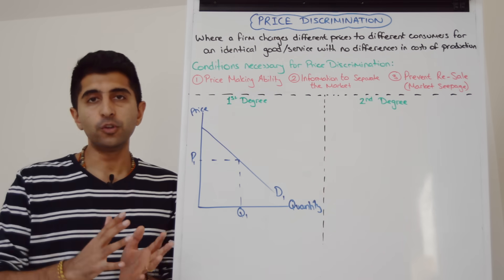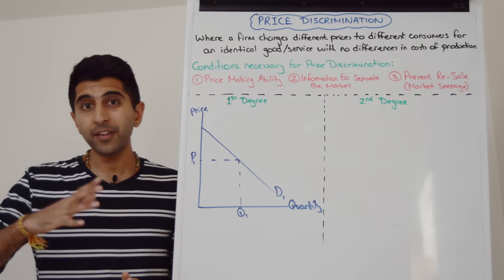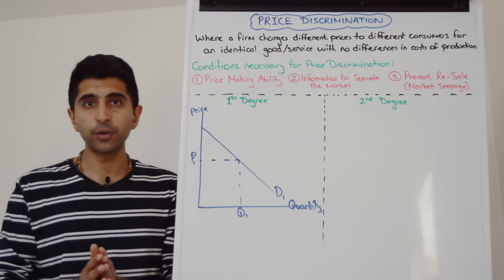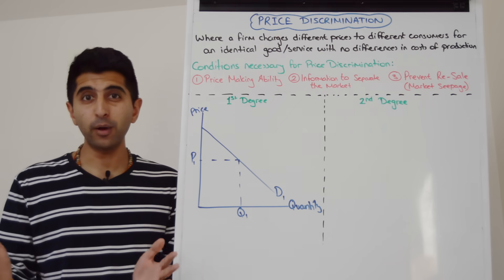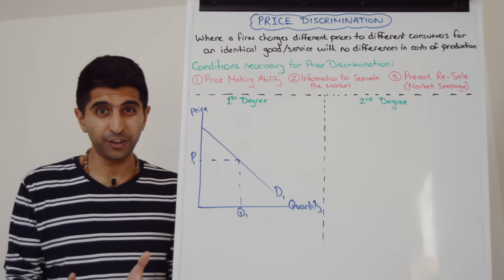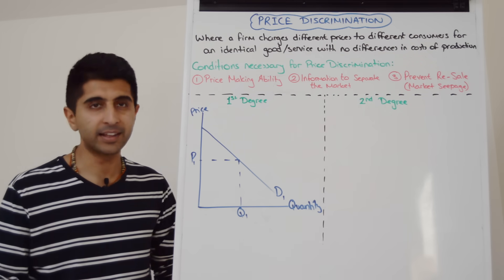So there might be a person who's maybe charged four pounds for a good or service, but then there's somebody else for an identical good or service with no differences in cost of production charged, let's say, 12 pounds. That sounds really dodgy, right? Well, how on earth can a firm get away with doing something like that?